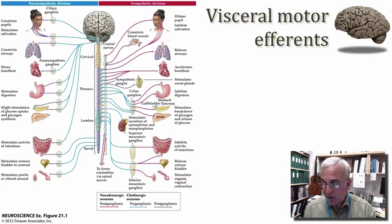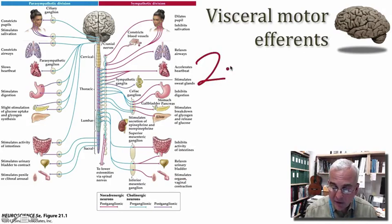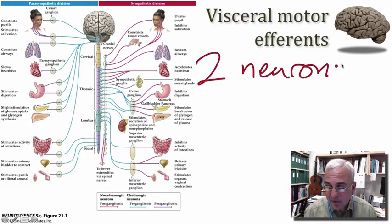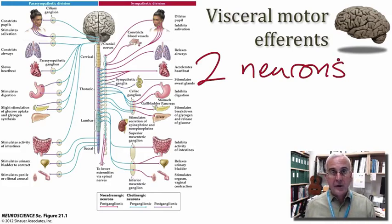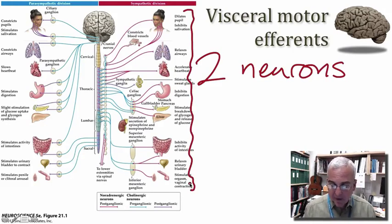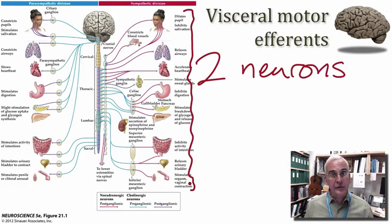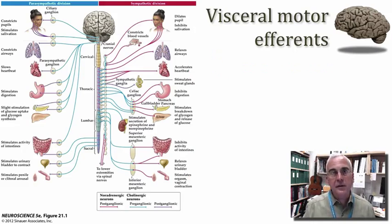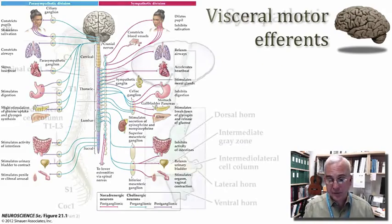The important take-home message about the sympathetic division is that it is a two-neuron chain from the CNS to the peripheral organ, and the sympathetic division is preparing the body for action — it is involved in mobilizing the resources of the body. Looking across the entire set of effects shown on the right side of this figure, we can understand how the body is getting ready for action in various ways.